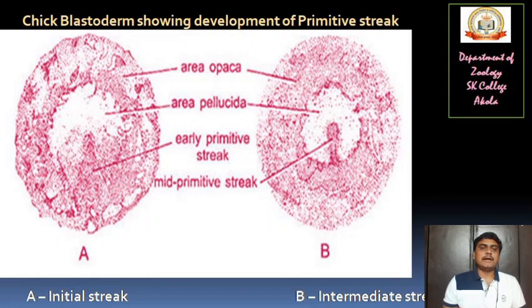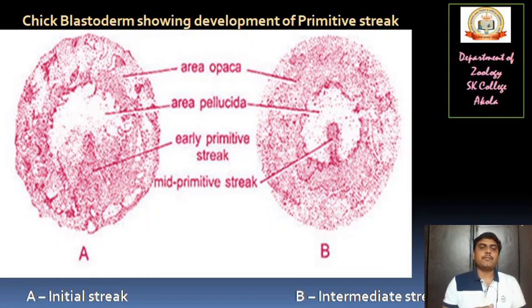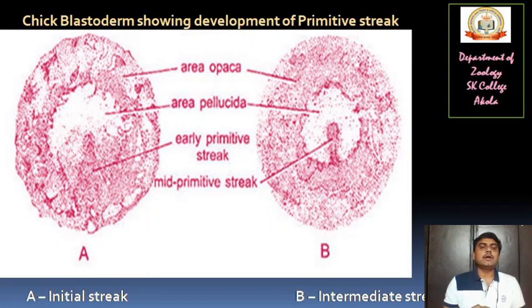After the late blastula, the embryo forms the primitive streak. In this diagram, you are able to see the area opaca — the outer cells of this picture — and in the middle, you can see the area pellucida, which is a transparent membrane. All growth and development, that is the formation of the embryo, occurs in the area pellucida. We call it the early primitive streak, as seen in diagram A.